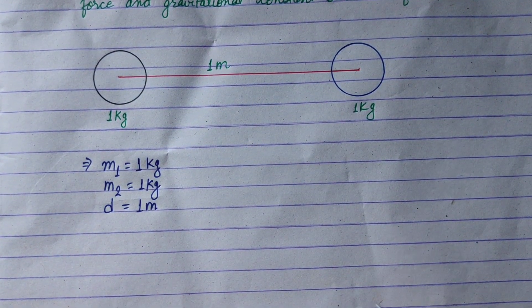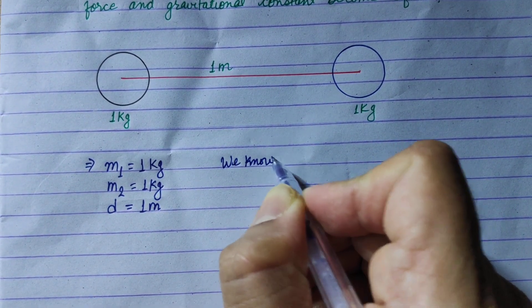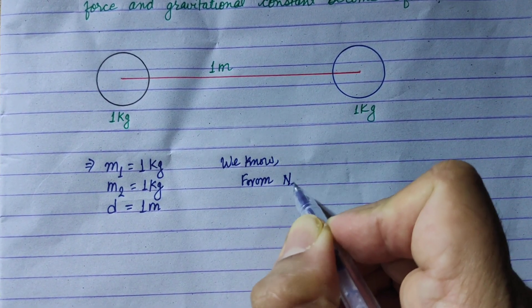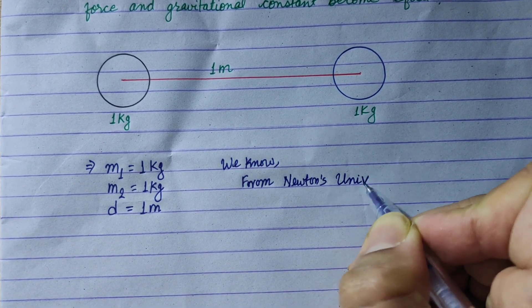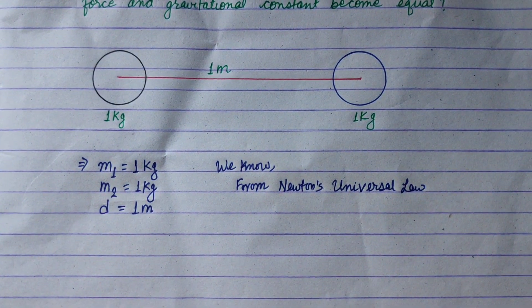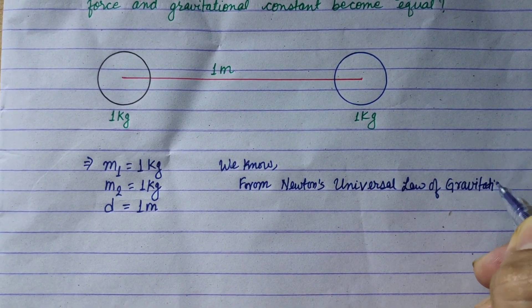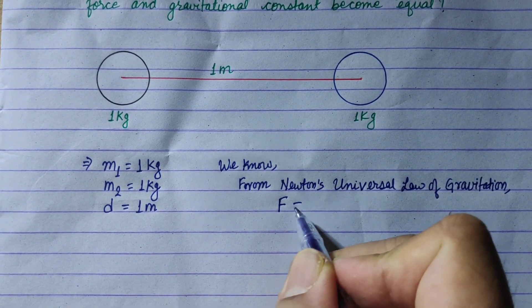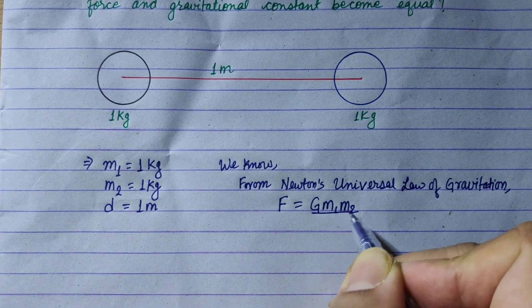We know from Newton's universal law of gravitation. Looking at the mathematical relation: F equals G times M1 times M2 upon d squared.